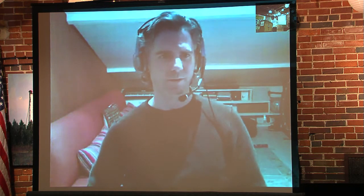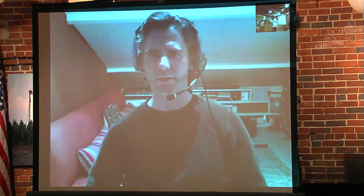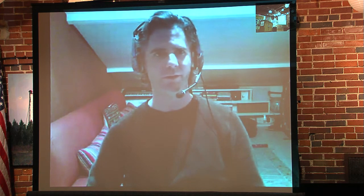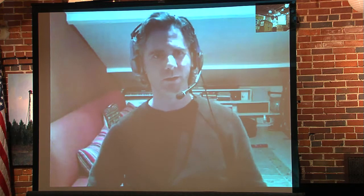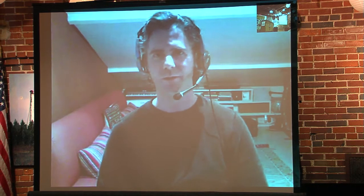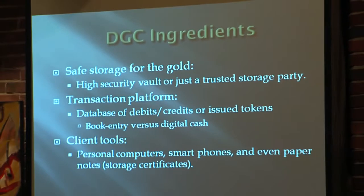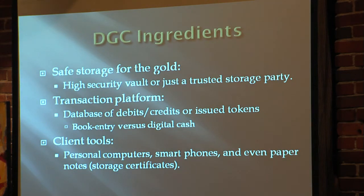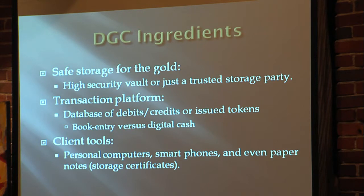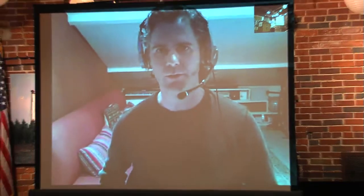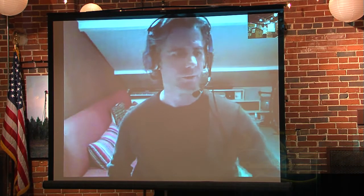Now, going to slide 11 — the basic ingredients that make digital gold currency work, and they are very few and quite simple to understand. The first and most important is safe storage for the gold itself. This could be anything from a high-security vault holding billions of dollars of equivalent value, or something as simple as a trusted storage party. If we're talking a local community of a few hundred people, it might be a trusted party within the town that has a vault facility that can store a few hundred thousand dollars worth of gold.